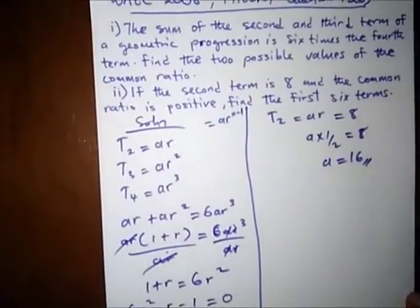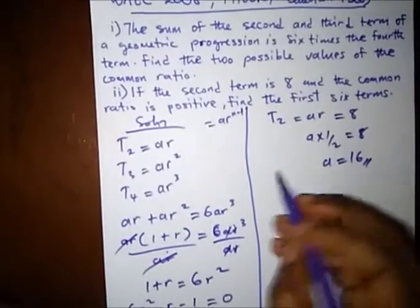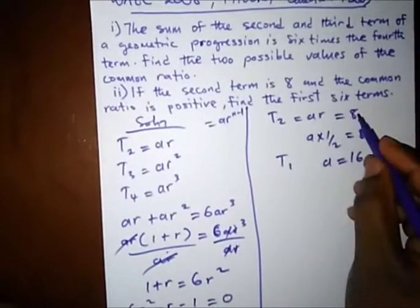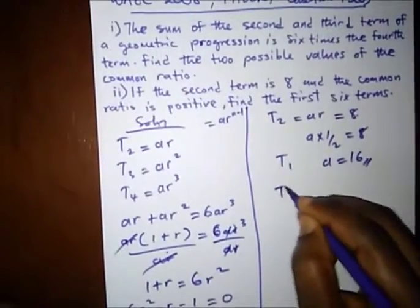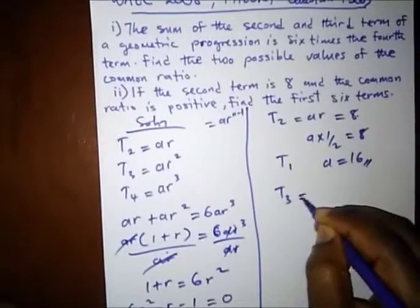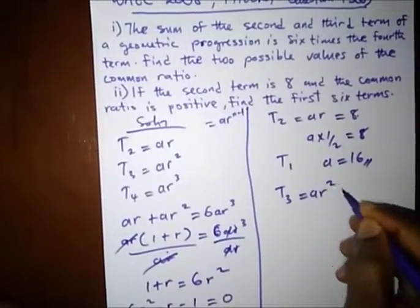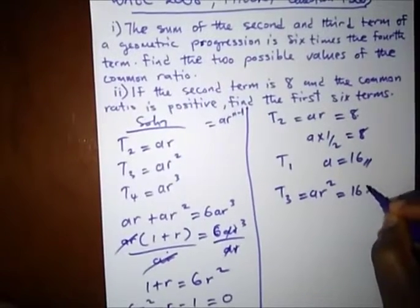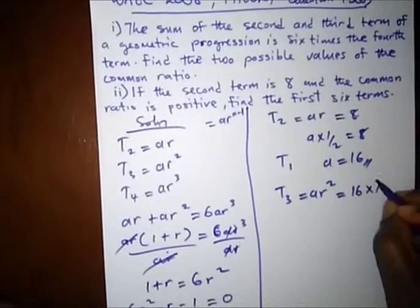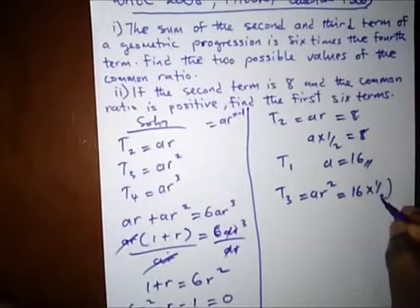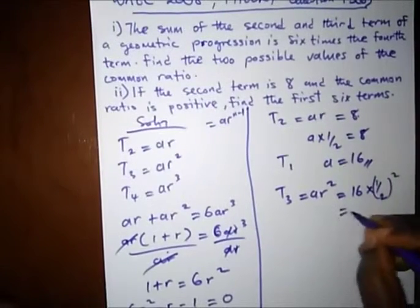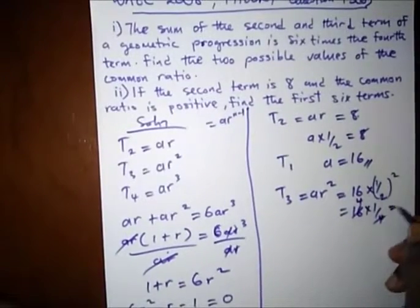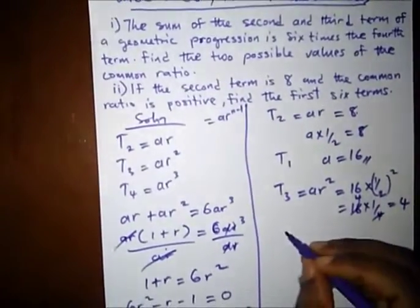The question says find the first 6 terms. We already know our first term, and we know our second term as 8. So what's our third term? Our third term is AR squared, where A is 16, R is 1 over 2, and this is 1 over 2 squared. This is 16 times 1 over 4, which gives us 4. Our third term is 4.